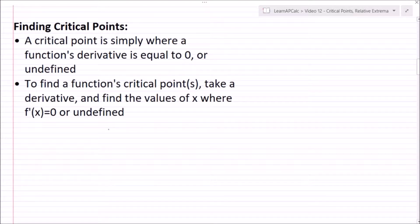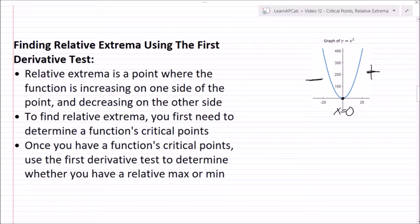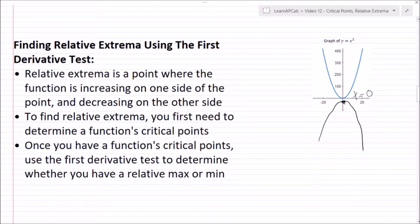That's easy to forget, so do remember it. Relative extrema are points where the function is increasing on one side of the point and decreasing on the other. On the graph of y equals x squared, at x equals zero, to the right the function is increasing and to the left it's decreasing — so we have a relative extrema at x equals zero. You can be more specific: x equals zero is a relative min for y equals x squared, or a relative max for y equals negative x squared.